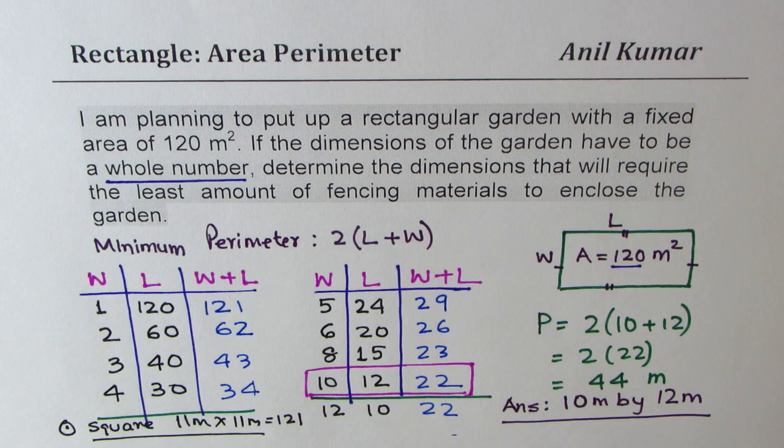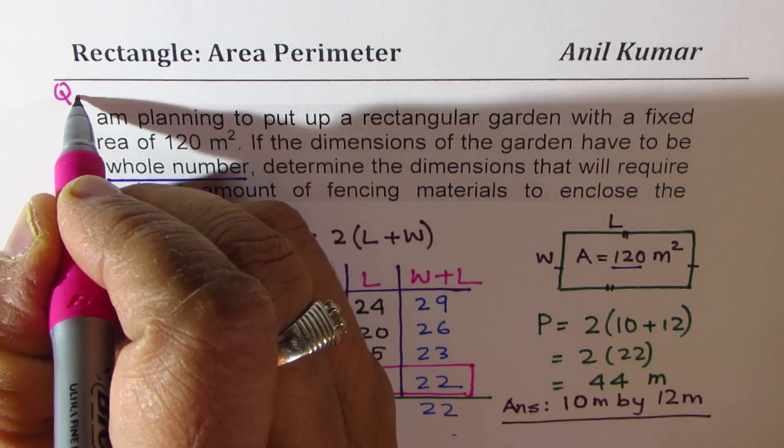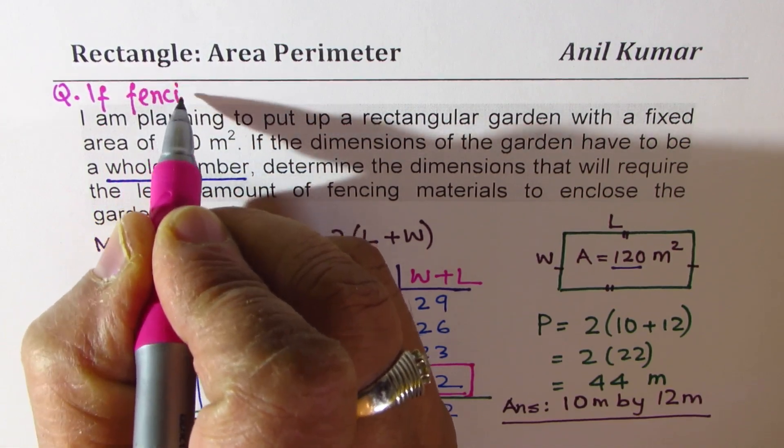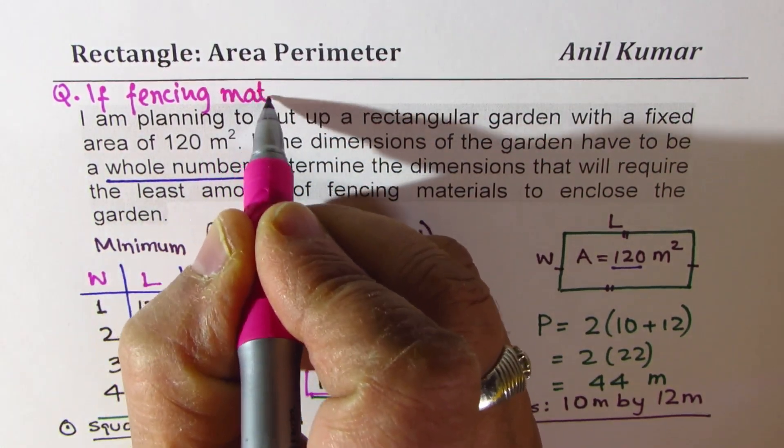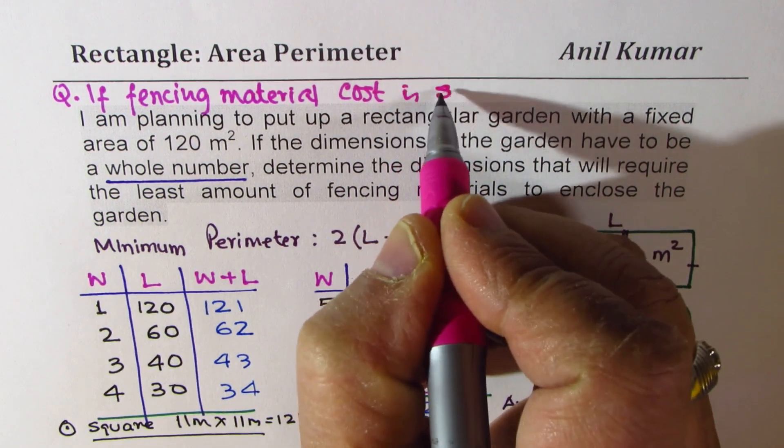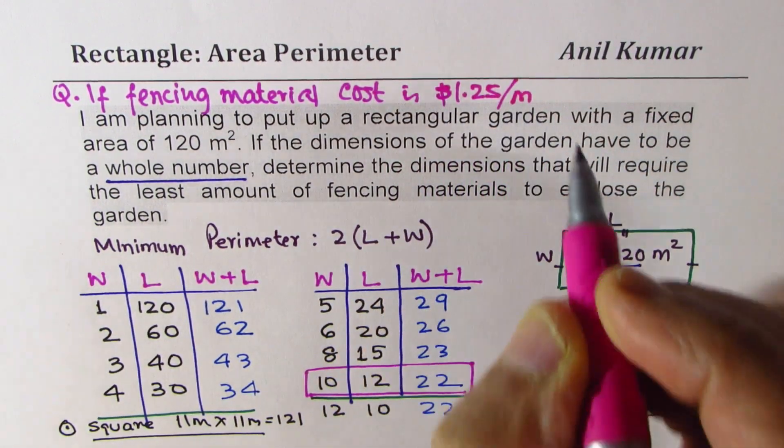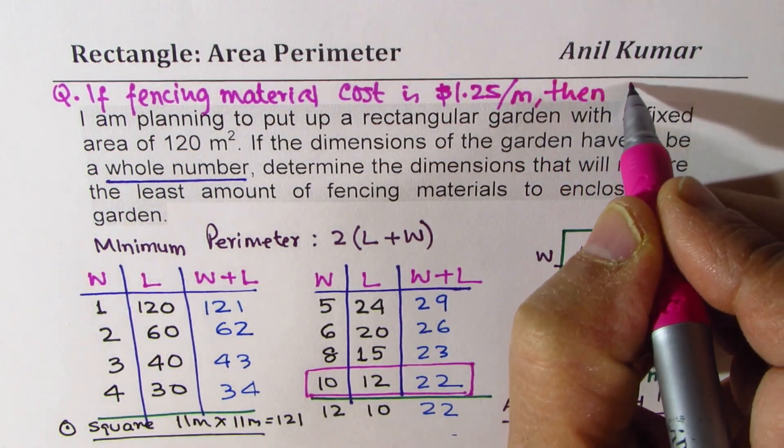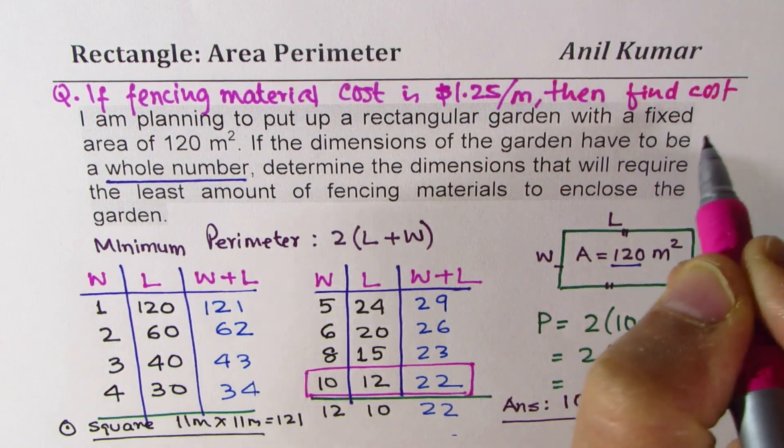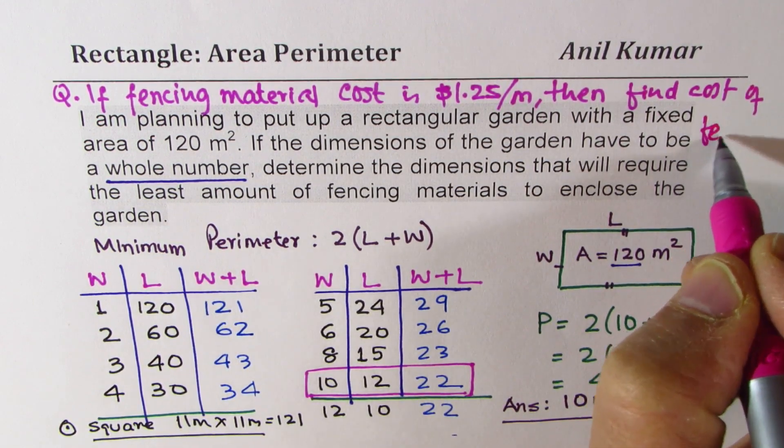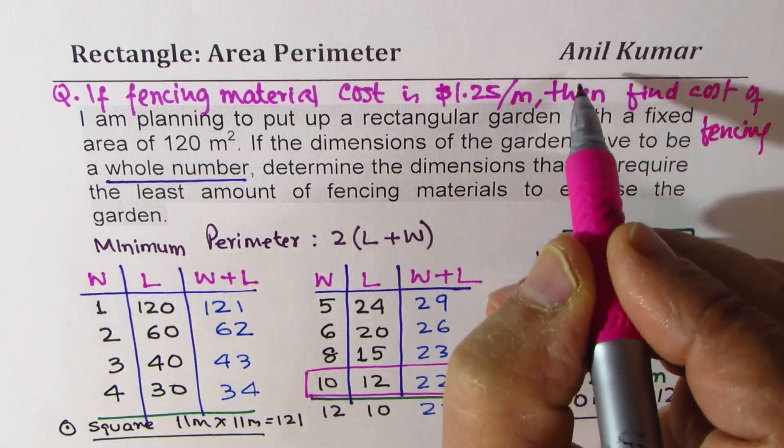So that is how we could actually solve this particular question. Now, here is a question for you. Question for you is that if fencing material cost is $1.25 per meter, then find minimum cost of fencing.